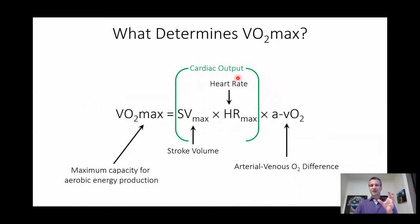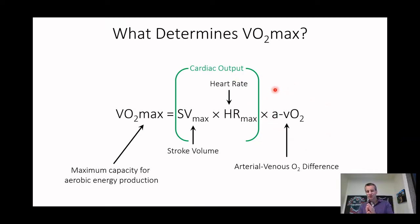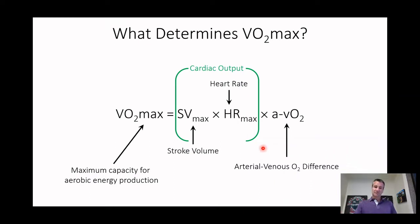The other thing we can train — because we can't train our maximum heart rate, that's not something that can adapt — is the arterial-venous difference. If we measure blood flow in and blood flow out, how much oxygen did we lose over that muscle mass? What determines the a-vO2 difference is delivery of oxygen: how many blood vessels do you have going into that muscle?